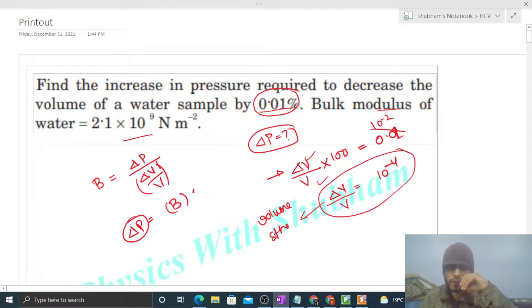That is bulk modulus times delta V by V. Bulk modulus is 2.1 × 10^9, and delta V by V is 10^-4. So this will be 2.1 × 10^5 Pascal.